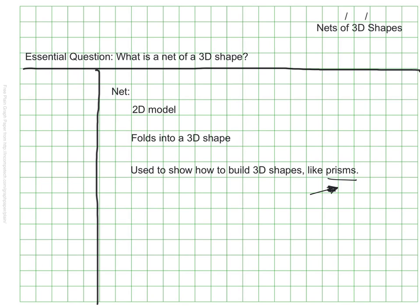You may be wondering what a prism is, so let me just take a moment to explain that. A prism is a type of 3D shape. It has two opposite, congruent, and parallel faces. We'll be exploring types of prisms in class together.